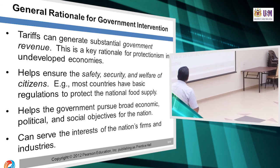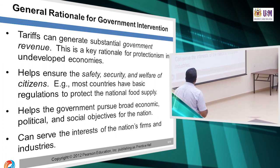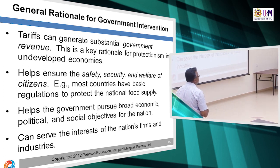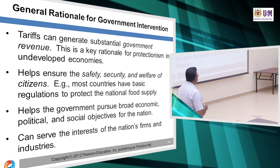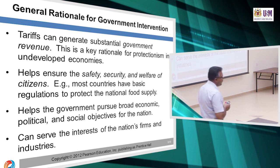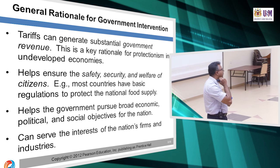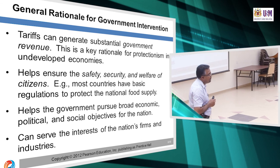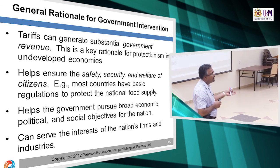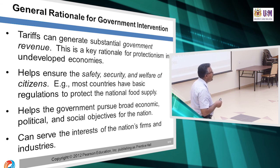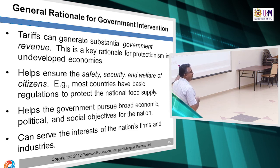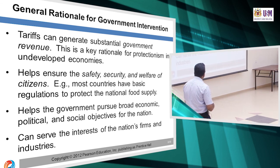Government intervention helps ensure the safety, security and welfare of citizens. For example, most countries have basic regulations to protect the national food supply — some protectionism is needed. In Malaysia, we have to protect the rice fields so that rice farmers can continue to produce rice for our country. If we do not have protectionism for them, we have to import a lot of rice.